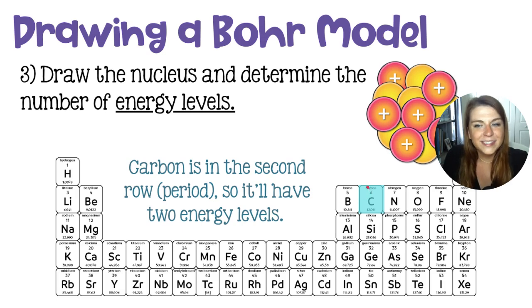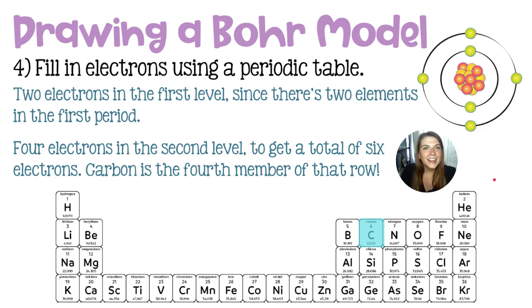You also know that you will have six electrons inside of that carbon, but the question is how do you organize those six electrons across the two principal energy levels? And this is where the magic of the periodic table comes into play.